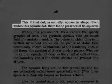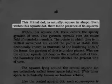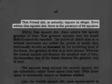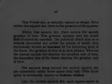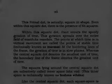The exact center of the frame of 64 squares is called the primal dot — again, a fair description of singularity. This primal dot is actually square in shape, and even within this square dot, there is the presence of 64 squares. This is a perfect description of a fractal recursive structure. Within this square dot, there occurs the speedy gyration of time, and this describes the spin component of space-time.